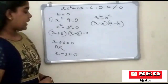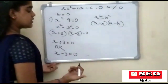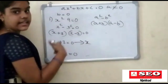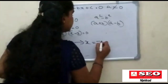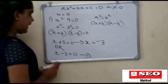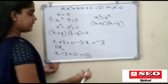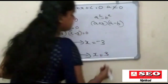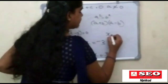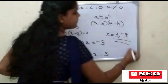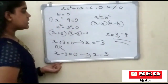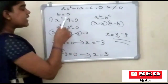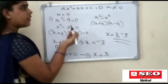A plus B into A minus B. Therefore x is equal to plus 3 or x minus 3 is equal to zero. Therefore x is equal to minus 3 or 3. So we will have x equal to 3 and then minus 3.